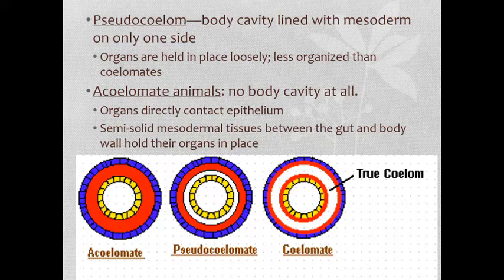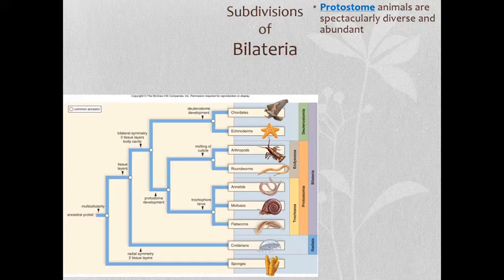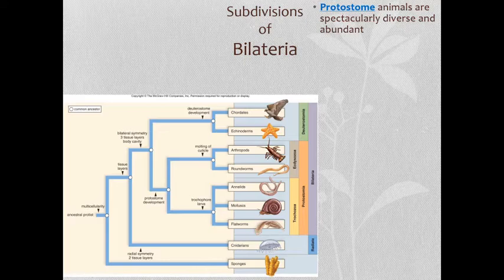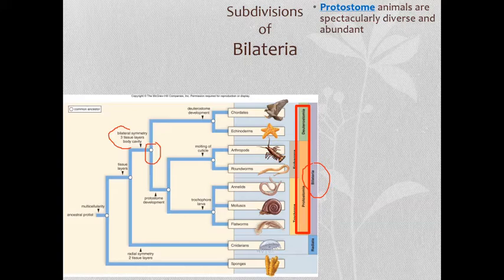Going back to our simplified phylogeny, I want to break up the bilateria — the bilateral organisms — into two different groups: the protostomes and the deuterostomes. All protostomes and deuterostomes share bilateral symmetry, three tissue layers, and a body cavity, and of course some are coelomate, pseudocoelomate, or acoelomate. The protostomes branch off in this direction, and here are the deuterostomes.